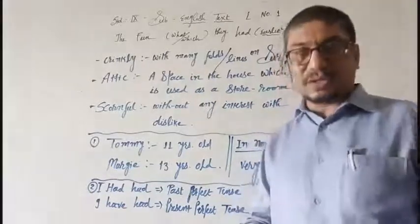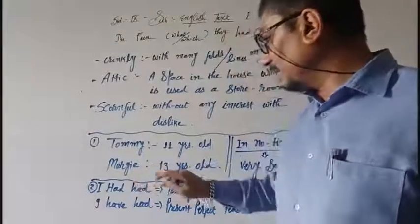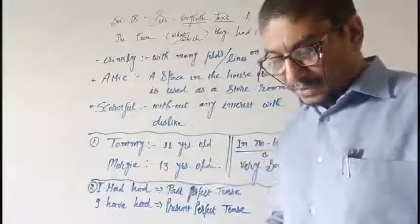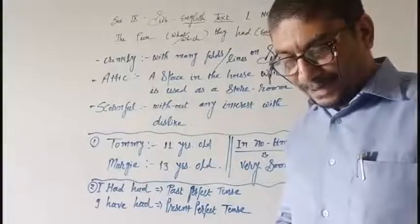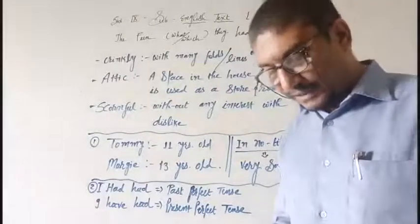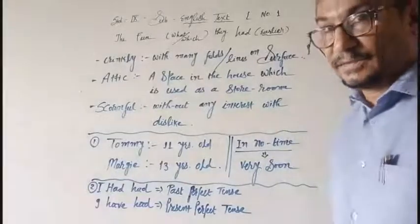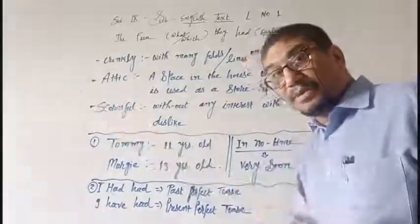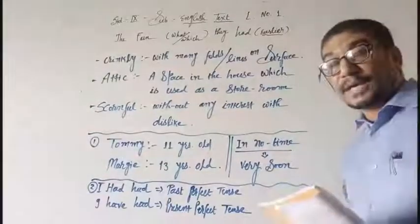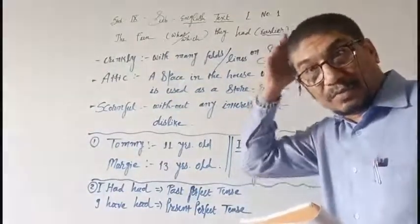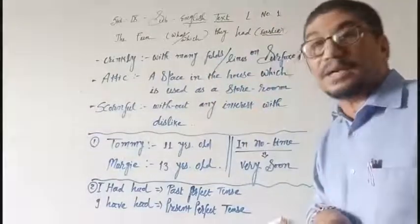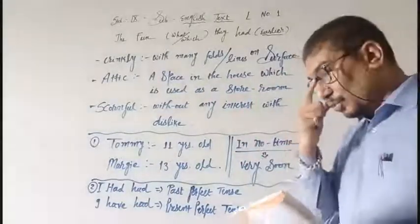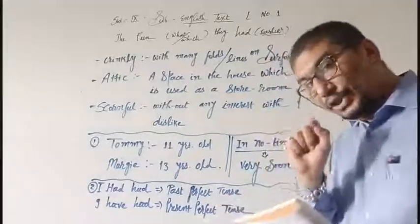Margie even wrote, two characters again, Tommy and Margie. Margie even wrote about in that night in her diary on the page headed 17th May 2157. It means 2021 we are here at present, near about 150 years after this time. The diary also can be in the form of mobile phone, tablet, palm top, laptop, desktop, etc.